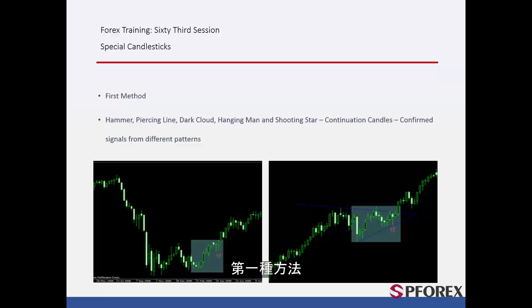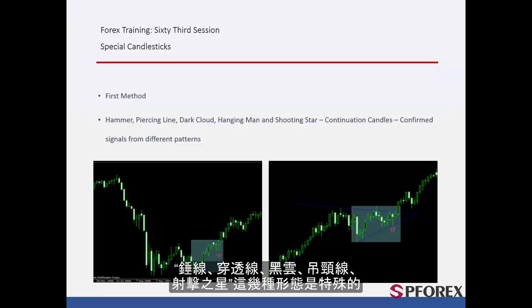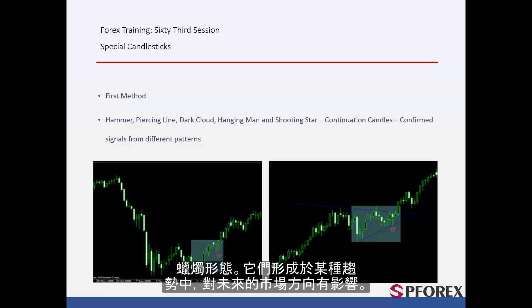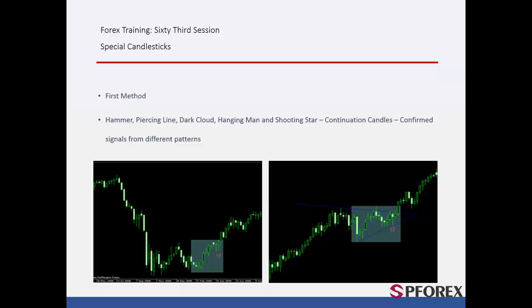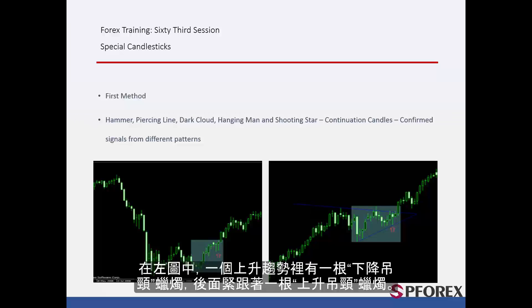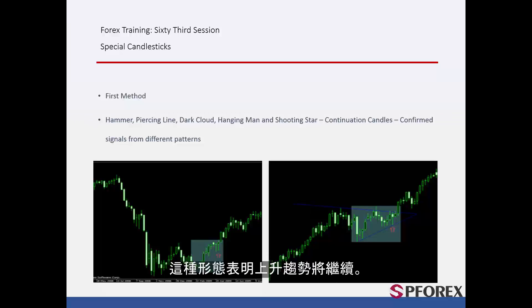7. Hammer, piercing line, dark cloud, hanging man and shooting star are all special candlestick patterns that can form in a trend to determine the future direction. On the left graph, a bullish hanging man has formed on an upward trend, just after a bearish hanging man. This pattern confirmed that the uptrend would continue its direction towards the top.